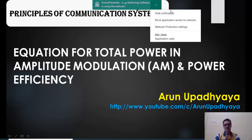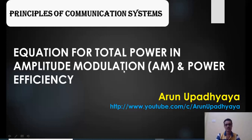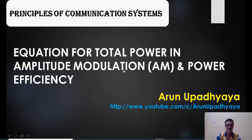Hello everyone, welcome to this video where I am going to explain the standard equation for total power in amplitude modulation. As you are aware, in the standard equation of AM — that is double sideband full carrier — we actually transmit three components: the upper sideband, lower sideband, and unmodulated carrier. We will discuss the power required to transmit AM, and also the equation for power efficiency and how efficient amplitude modulation is.